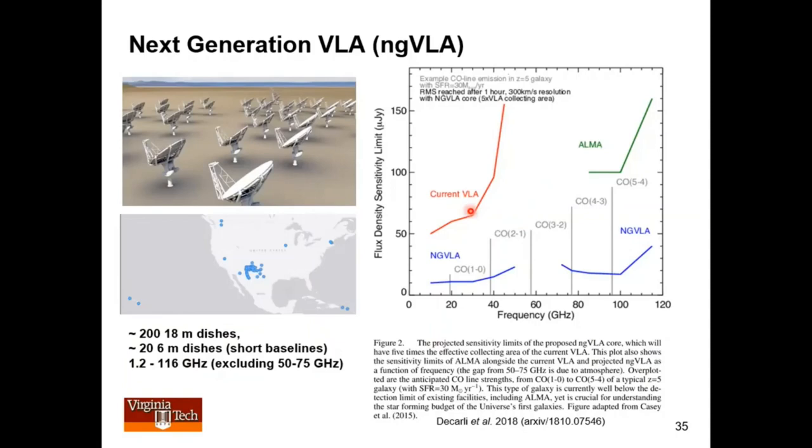This is a slide that gets passed around a lot these days because it's so exciting. This is sensitivity versus frequency for the current VLA. This is a micro Jansky. So here you're seeing 50 micro Janskys, and it goes up like this. For ALMA, which I haven't talked about at all because it's not in North America, but it's certainly an important millimeter wave telescope, you can see higher frequencies, and this is what its sensitivity looks like.